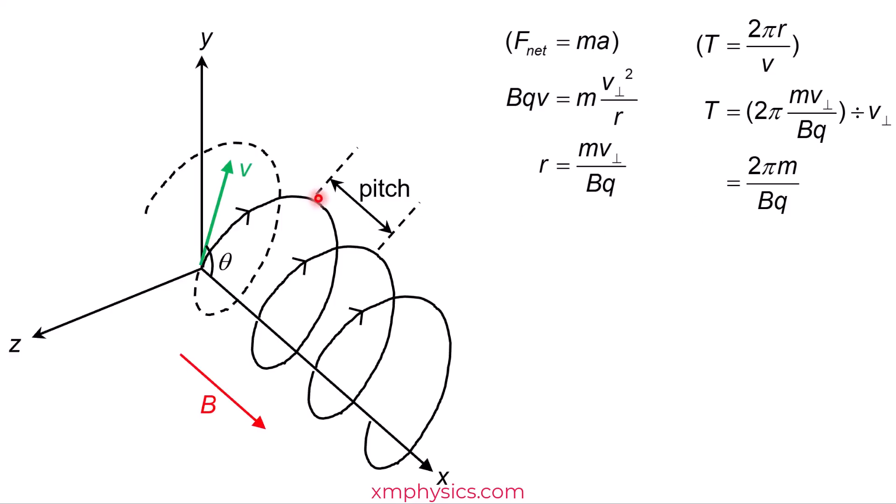So going back to this diagram, what is this distance? We can calculate it by the parallel component of velocity times the time taken for it to complete one round of circular motion. So it's just V cosine theta times 2πM over BQ.